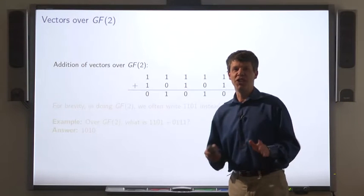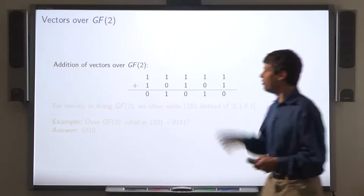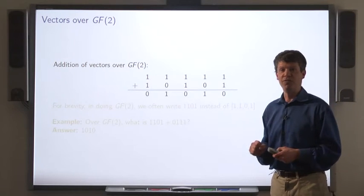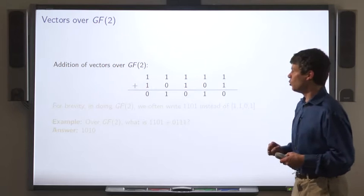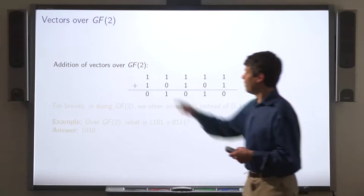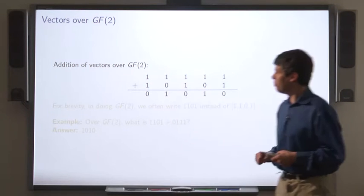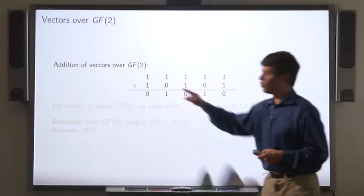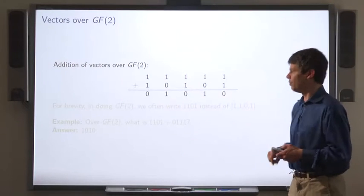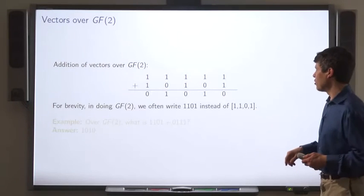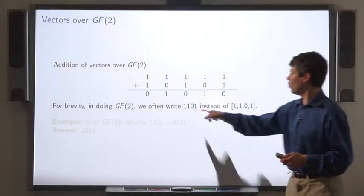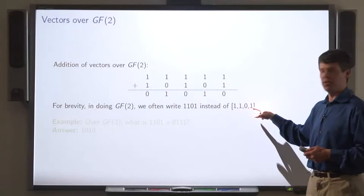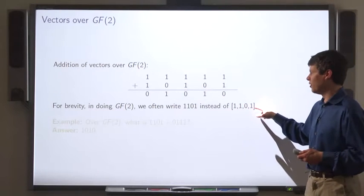Now we turn to vectors over GF2. Here's an example of addition of GF2 vectors. We're adding them entry-wise, and of course 1 plus 1 is 0, 1 plus 0 is 1, and so on. We'll use the notation sometimes 1,1,0,1 instead of the list 1,1,0,1.